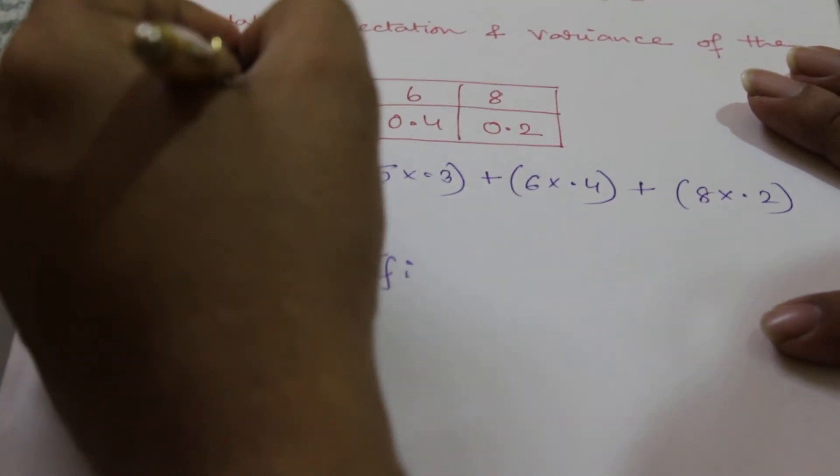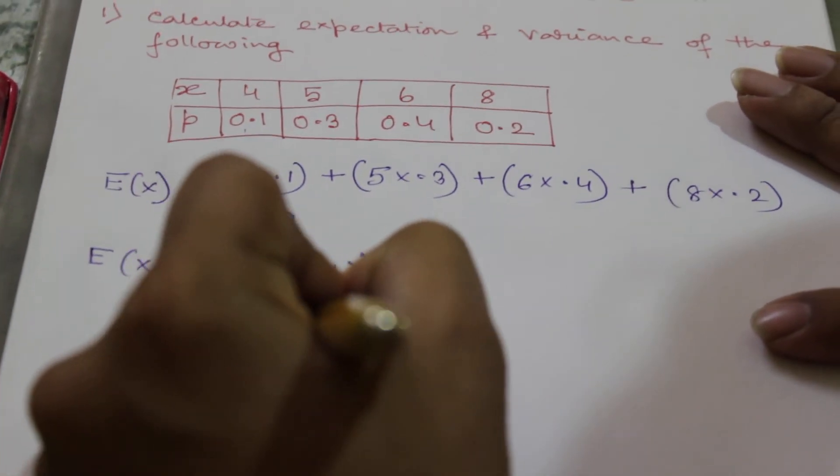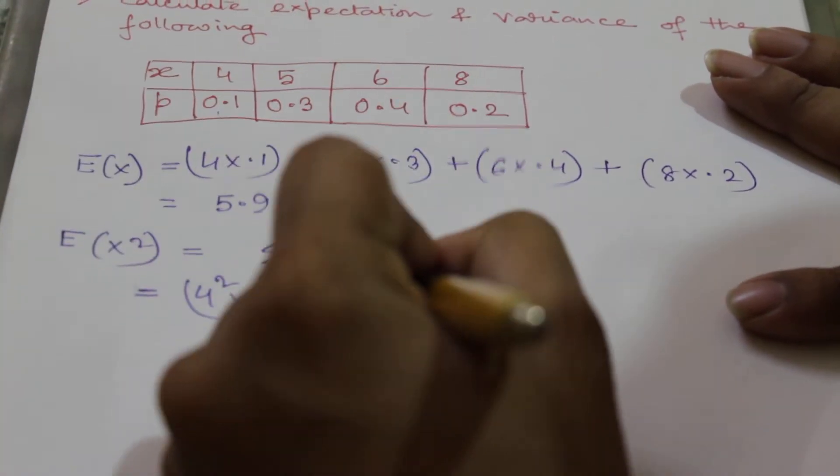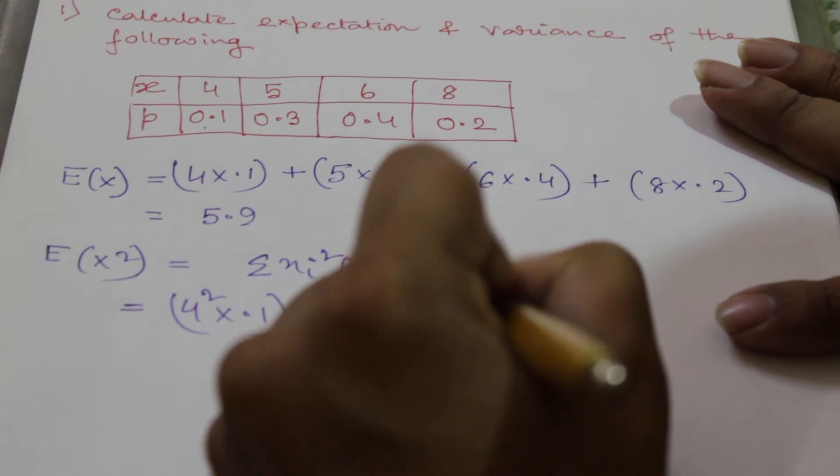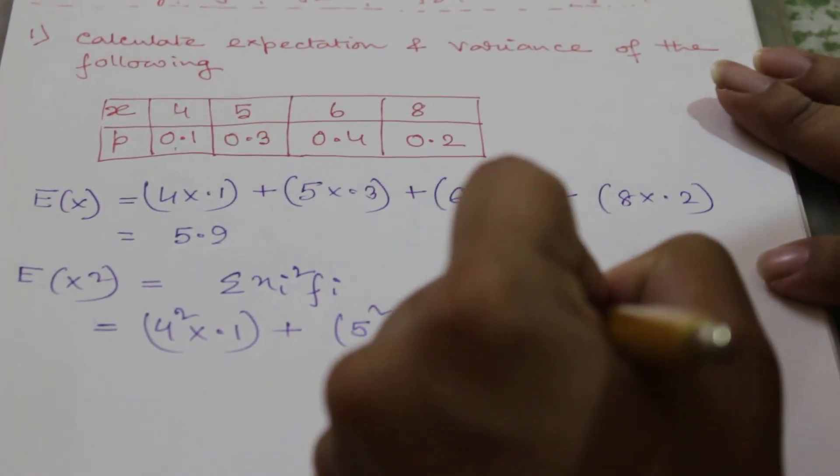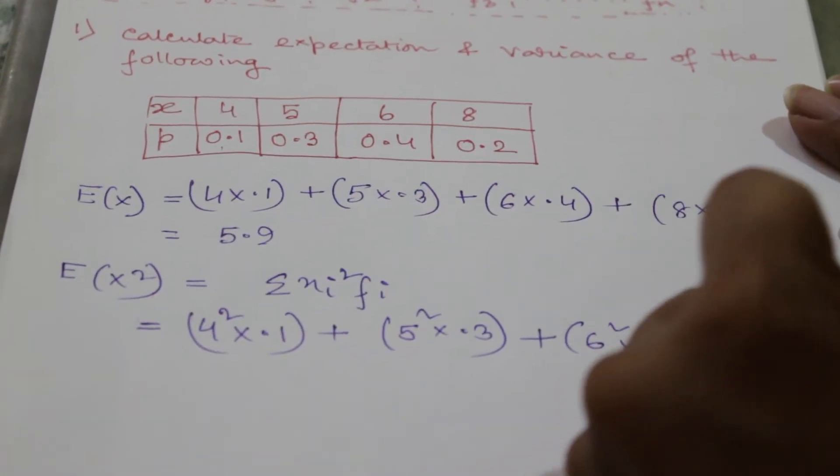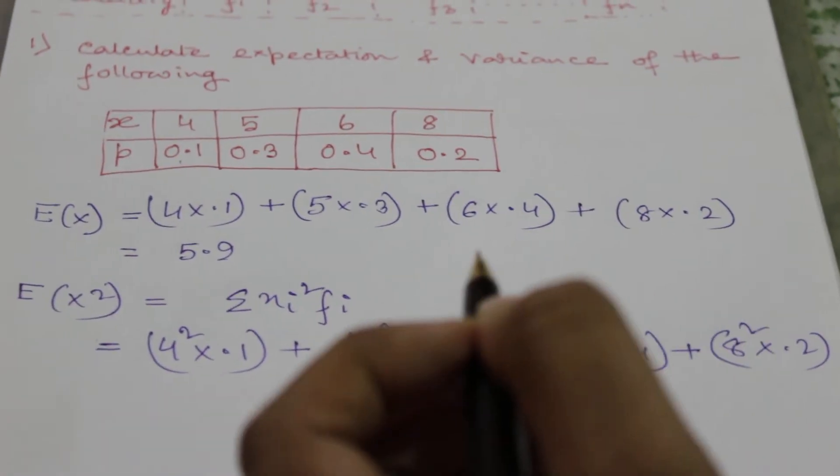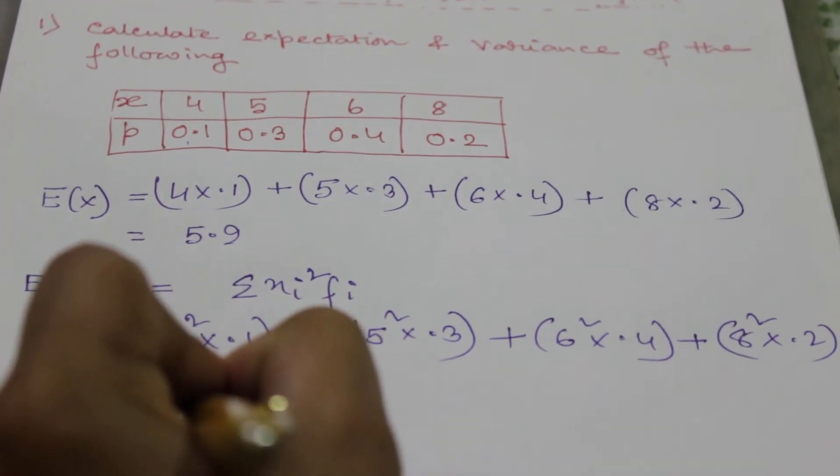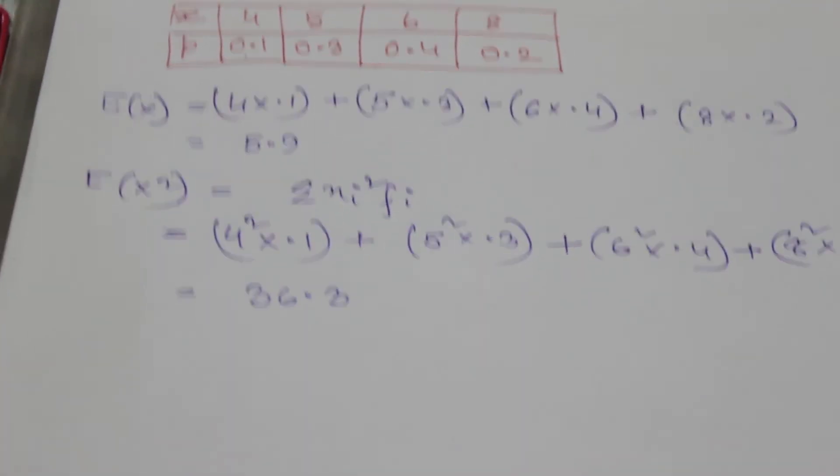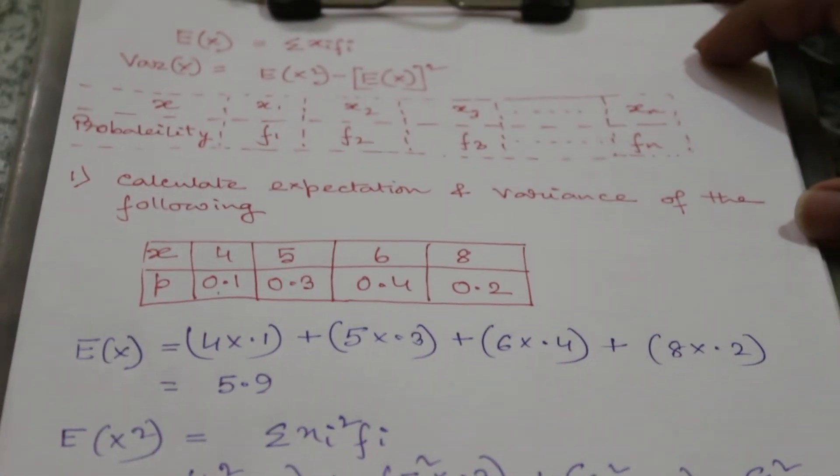So 4 square into 0.1 plus 5 square into 0.3 plus 6 square into 0.4 plus 8 square into 0.2, which is equal to 36.3. Now we have to calculate the variance. The formula of it is E(X^2) minus [E(X)]^2.